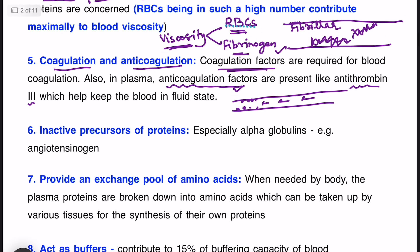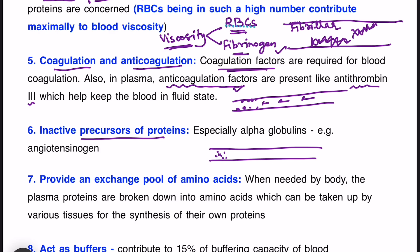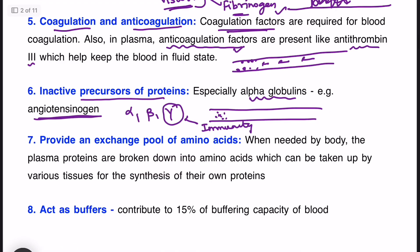Then there are inactive precursors of proteins. In the plasma we have inactive precursors of other proteins — they are inactive and need to be activated. An example is angiotensinogen, which is a type of alpha globulin. So among globulins: gamma is for immunity, some globulins are for transport, and various alpha globulins act as inactive precursors of proteins.